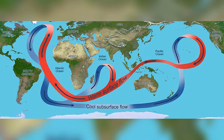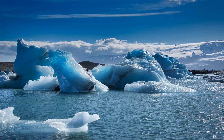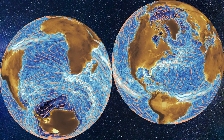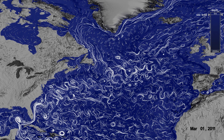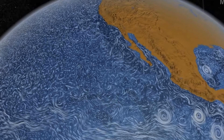Ocean currents are continuous movements of ocean water that occur on both global and regional scales. These currents are driven by a combination of factors, including temperature variations, wind patterns, and the rotation of the Earth. Ocean currents can be classified into two types: surface currents, which flow in the upper layer of the ocean and are driven by winds, and deep ocean currents, which occur in the deeper layers and are mostly driven by differences in water density. Understanding the dynamics of ocean currents is essential in comprehending the intricate interplay between the oceans and the atmosphere, which ultimately influences the seasonal changes we experience.